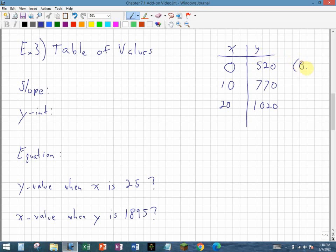Next, I want to run through a table of values type of question. If you see a table of values, it might be a good idea to think of each one of these things in terms of a coordinate point. From the table of values, I could get two points. I would have (0, 520) and another point would be (10, 770). I could find a third point as well, given the third value that I have below, but we'll just use these two for now.